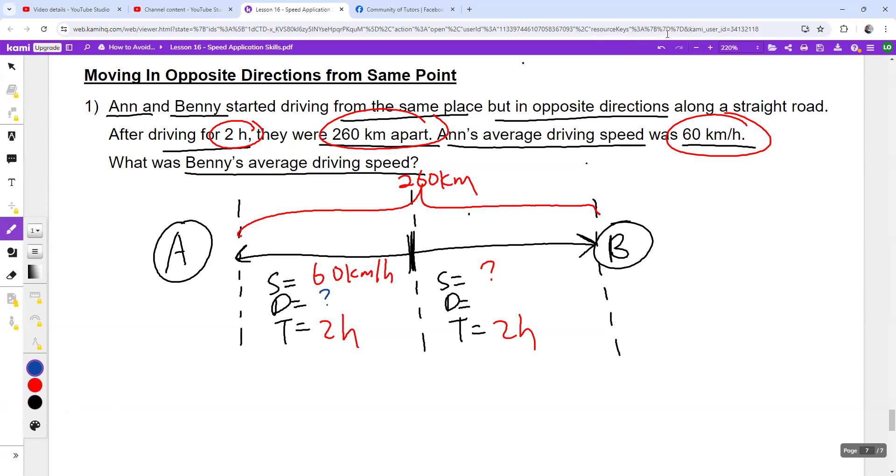So what is the distance traveled by Ann? So distance is speed multiplied by time. So you will have to write down the units in your steps. So you have the hour, and here also hour. So they are the same. So you can multiply. So you have 60 times 2. That will give you 120 kilometers. So which means that Ann traveled for 120 km for the first part.